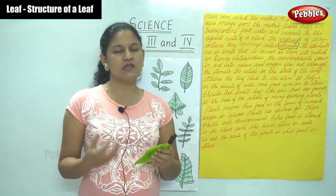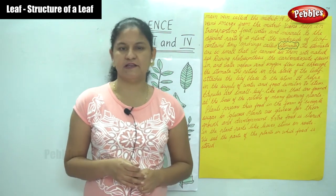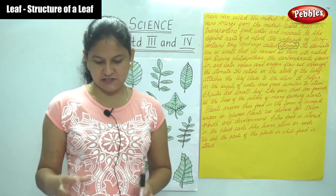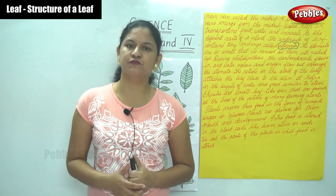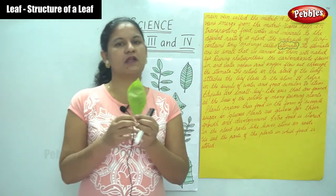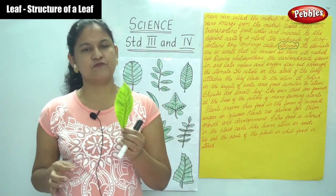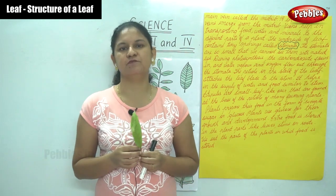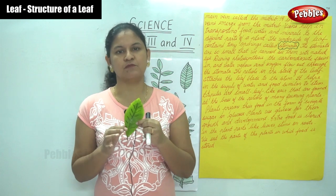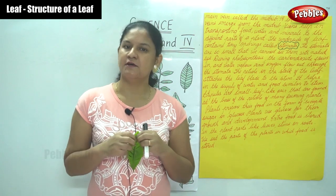To summarize: the three main parts of a leaf are the leaf base, the leaf blade, and the petiole. The leaf is called the kitchen or food factory of a plant because it prepares food. Plants are green because of the presence of chlorophyll, which gives color to the leaves and helps in the preparation of food. The leaf is flat to allow maximum absorption of sunlight, since only in the presence of sunlight can a leaf prepare its food.